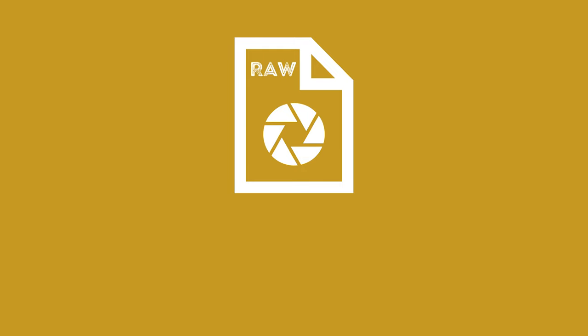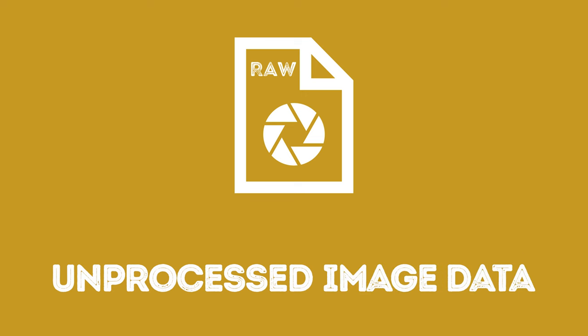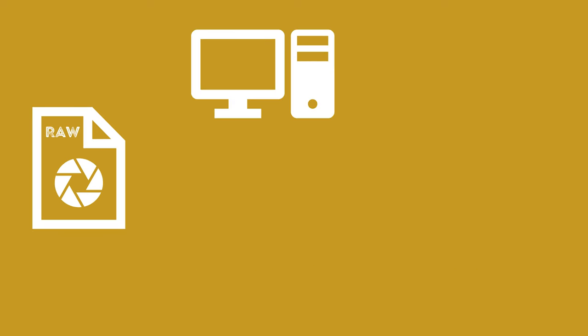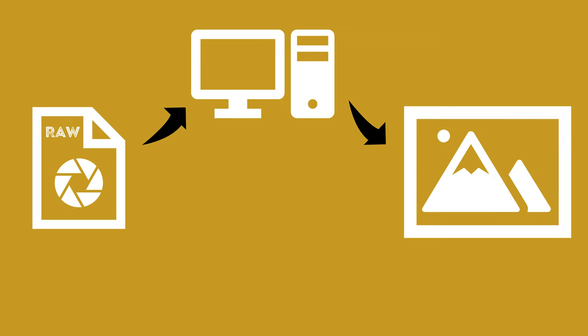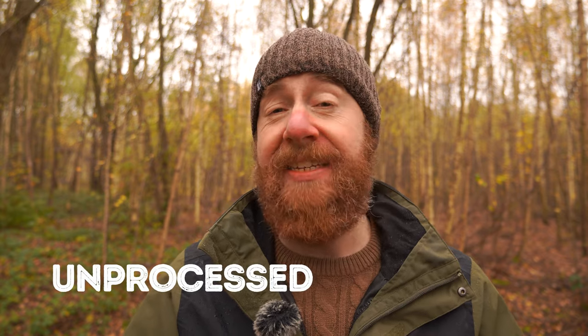Remember that a RAW file is just unprocessed image data. So when you import a RAW file into your photo editing software, it's converting that unprocessed image data into something that you can look at — but that is not your RAW file. You need the RAW file conversion in order to be able to edit with it. And I say 'edit with it' rather than 'edit it' because you can't actually edit a RAW file directly. Like no two RAW file formats are the same, no two RAW file conversions are the same.